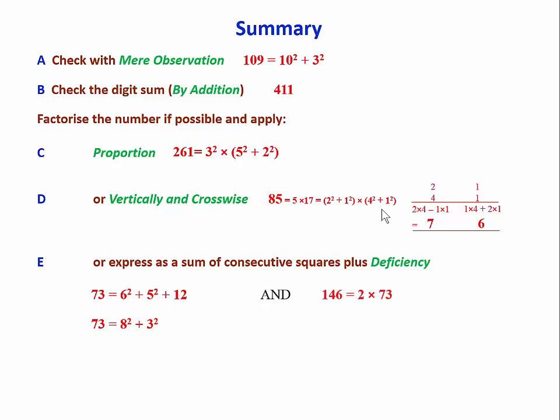And finally, we may have a combination of the general and special methods. Say 146, which is clearly twice 73, so we know that 2 can be expressed as a sum of squares, and 73 we've done over here, so you do a little work on that, and then you apply this vertical and crosswise pattern to get the answer, 5 squared plus 11 squared. Thank you.